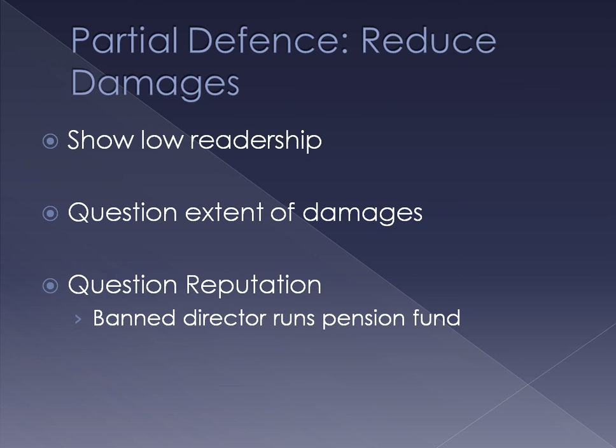The last option is a kind of partial defence for when you're accepting that this is defamation and you've made a mistake. The goal here is to reduce the damages — you're going to lose, you have defamed them, so how can you get your damages down? For example, show low readership — maybe not many people have seen this, so the damages are not as high. Show your mitigation: demonstrate that you took it down quickly, minimising the damages, or that you ran an apology. Those sorts of things are all good to do once you accept that you have defamed them.